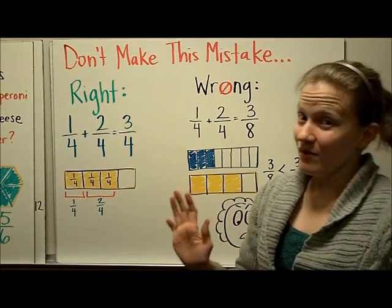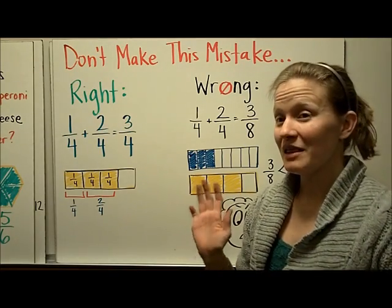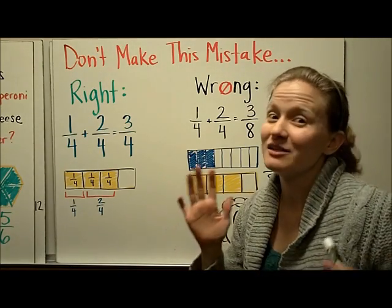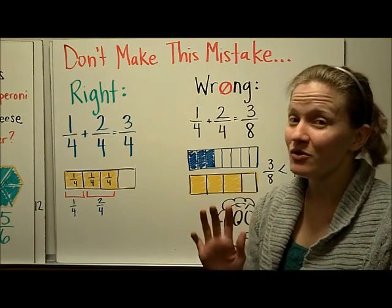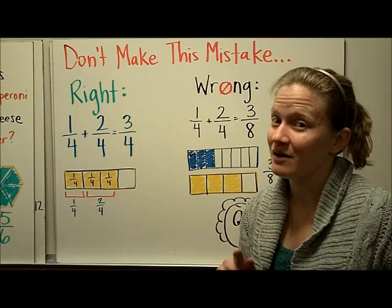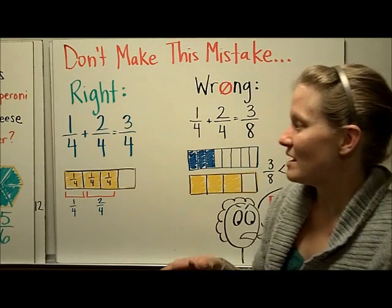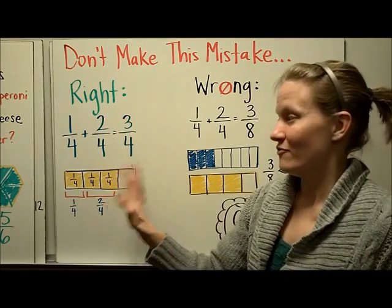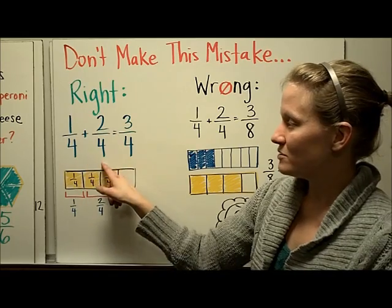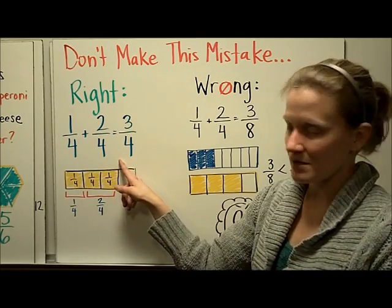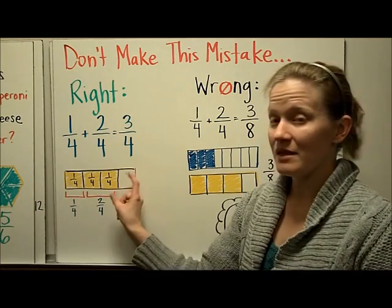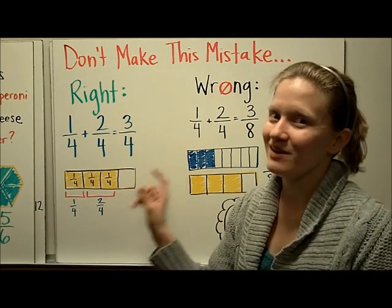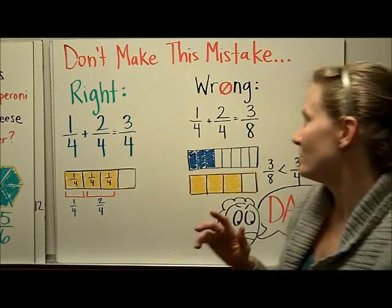Now, I want to warn you about a mistake that I see lots of third graders make and sometimes some fourth graders make it. So I want to show you so that you can help your friends watch out to make sure that they don't make the same mistake. So here's the right way to do it, first of all. 1/4 plus 2/4 equals 3/4. And I'm going to show it with fraction towers here. 1/4 put together with 2/4. The length of this piece is 3/4.